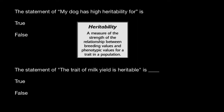Definition of heritability: heritability is a measure of the strength of the relationship between breeding values and phenotypic values for a trait in a population. The key word here is 'in a population.'